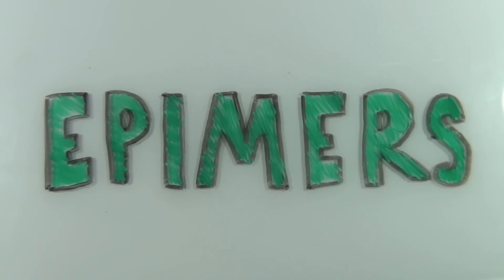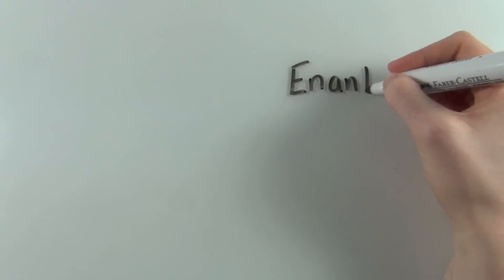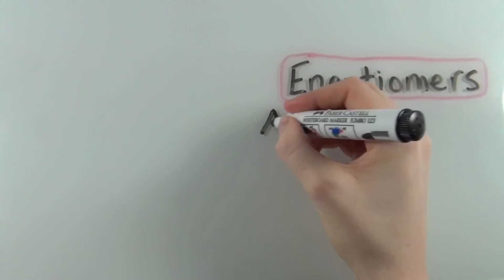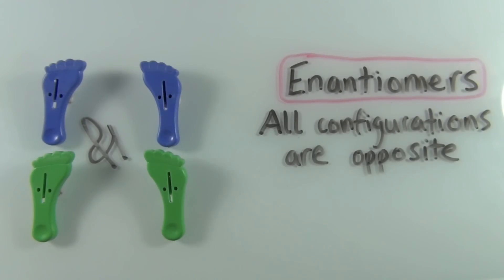To understand epimers, you need to have a solid understanding of enantiomers and diastereoisomers. What I want you to think about with enantiomers is the fact that corresponding chiral centres are always opposite. So wherever you have a left foot, you're going to have a right foot, and wherever you have a right foot, you're going to have a left foot.